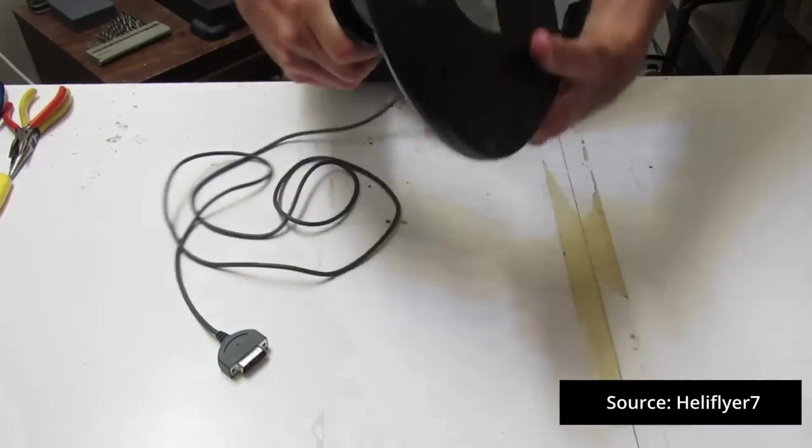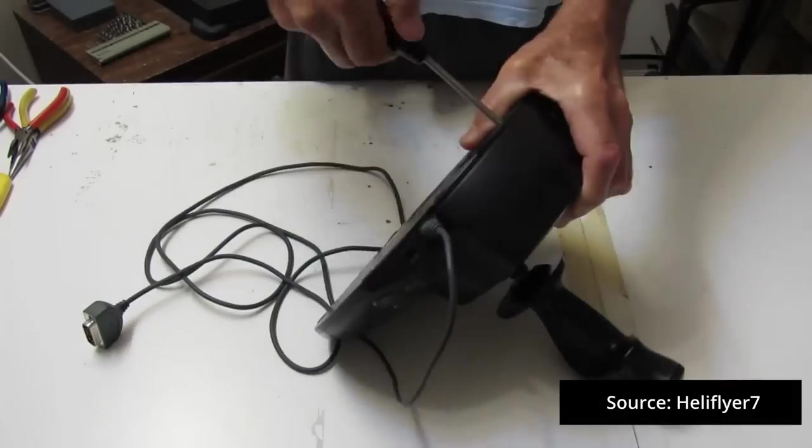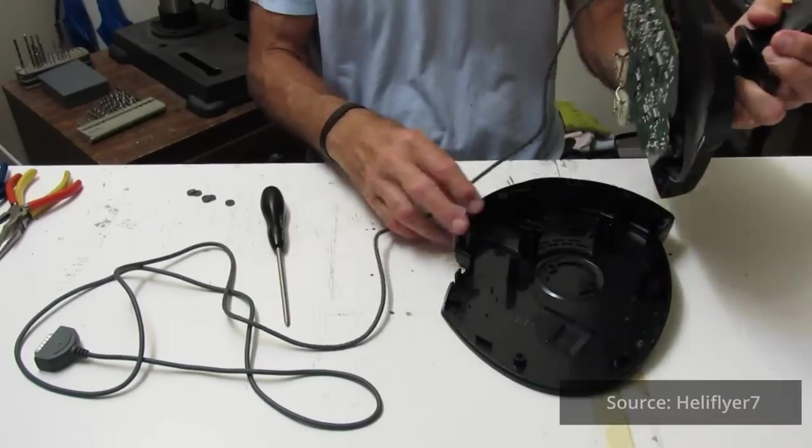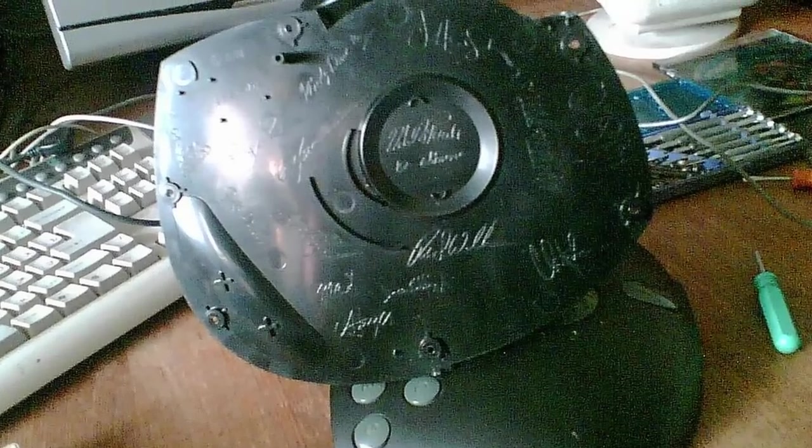Now if you happen to take your joystick and flip it over to reveal the anti-slip cover, remove that, as well as the few sets of screws underneath it, you can find this plastic plate that has a bunch of engraved signatures on it.